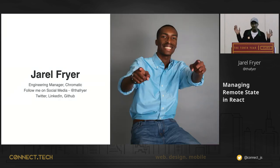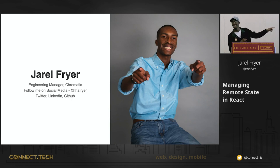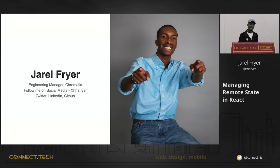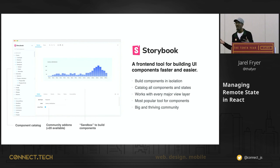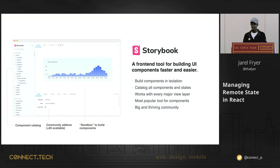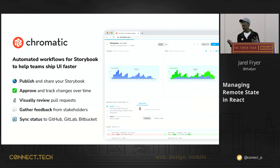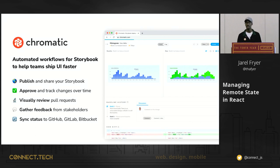I'm Jerrell, an engineering manager at Chromatic. You can follow me on social media at TheFryer — 'th' instead of 'th', trying to be cool — on Twitter, LinkedIn, or GitHub. At Chromatic we work on an open source product called Storybook, a front-end tool for building UI components faster and easier. We also have a closed source product called Chromatic, which adds tooling around Storybook for UI review, UI testing, publishing, sharing, hosting, and leveraging GitHub Actions to validate your stories and components.